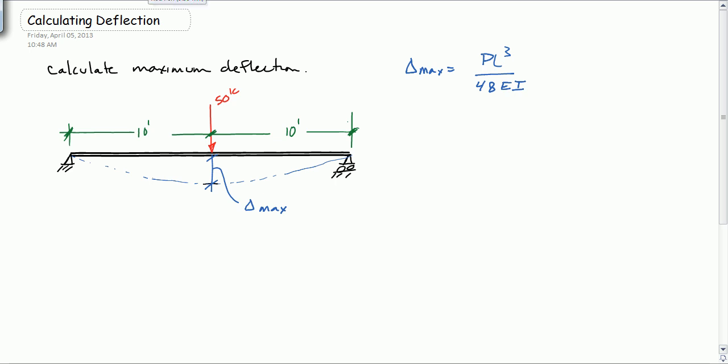So let's look at the different parameters here. Let's start with P. P is equal to 50 kips. L is equal to 20 feet because L is the overall dimension. And what about E and I? Well, E is the modulus of elasticity. So we need to know what material it is. So let's assume that this is steel. We look steel up in the table and we find E is equal to 29,000 ksi.